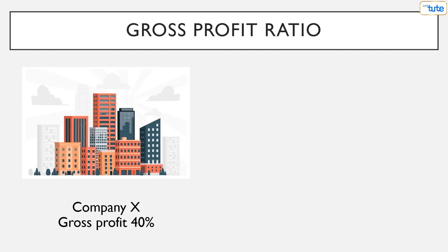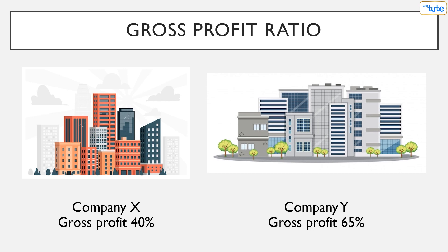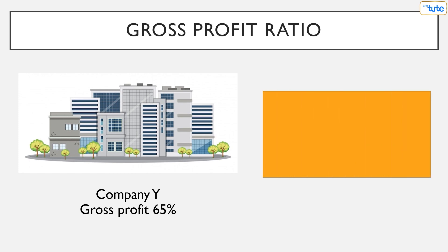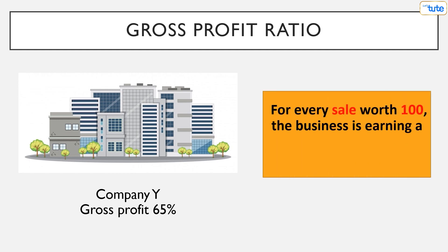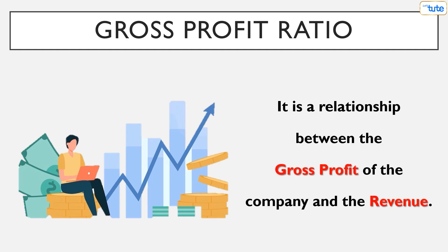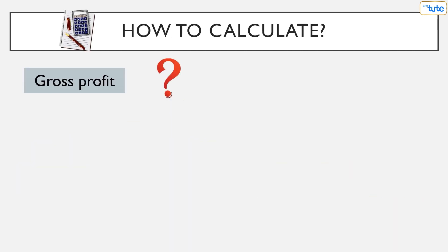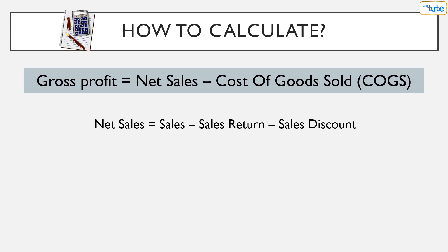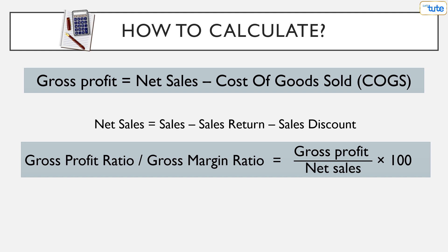Many times we hear that the gross profit of Company X is 40% or Company Y is 65%. What does this mean? If the gross profit ratio is 65%, it means for every sale worth 100, the business is earning a gross profit amounting to 65. The gross profit ratio expresses a relationship between the gross profit of the company and the revenue. The gross profit figure is net sales less cost of goods sold, and net sales is total sales less sales return and sales discount. The gross profit ratio, also referred to as gross margin ratio, is calculated as gross profit divided by net sales multiplied by 100.